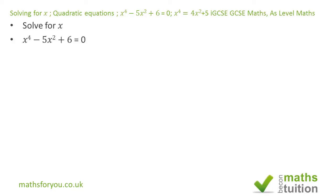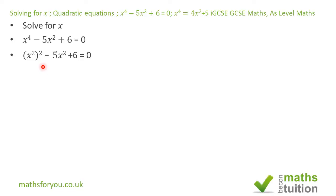We want to solve for x. If we replace x to the power 4 with x squared all squared, then we have x squared all squared minus 5x squared plus 6 equals 0. This is because x squared all squared is the same as x to the power 2 times 2, which is 4 — or you could say x squared times x squared, adding indices: 2 plus 2 gives you 4. So x squared all squared is the same as x to the power 4.